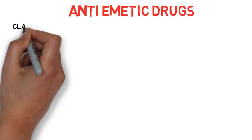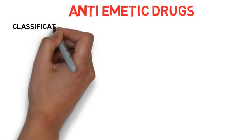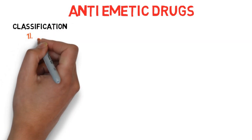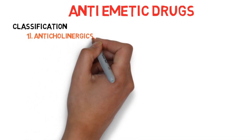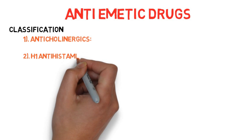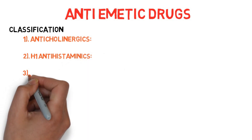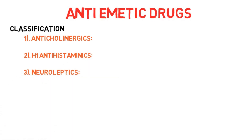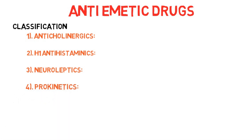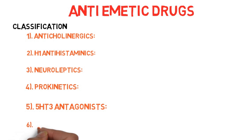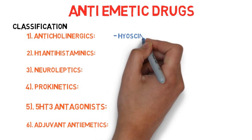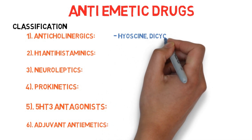Antiemetic drugs are classified into 6 different types. Number 1: anticholinergics. Number 2: H1 antihistaminics. Number 3: neuroleptics. Number 4: prokinetics. Number 5: 5-HT3 antagonists. And number 6: adjuvant antiemetics.